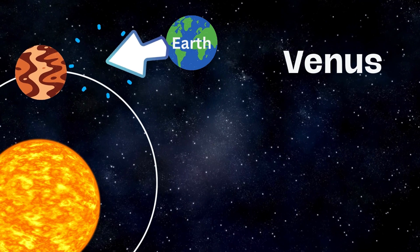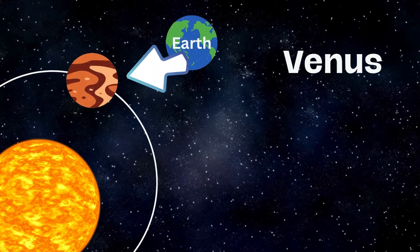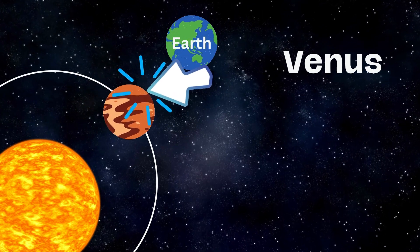Venus is often called Earth's sister planet because they are similar in size. It's also very hot and has thick clouds.